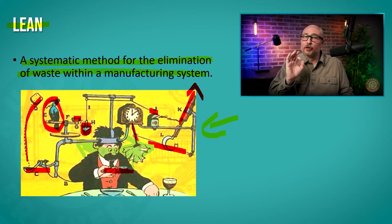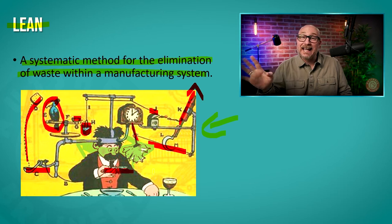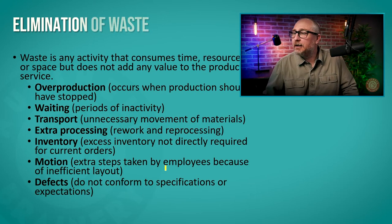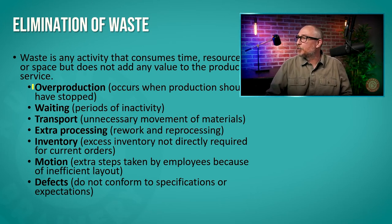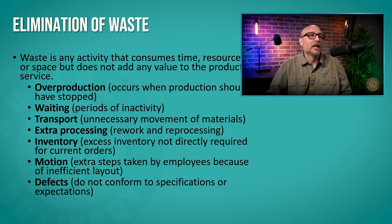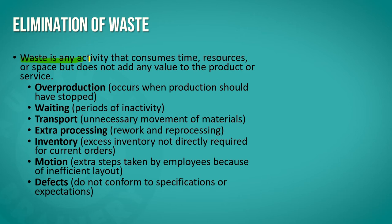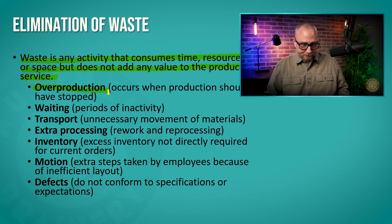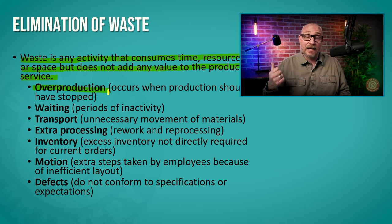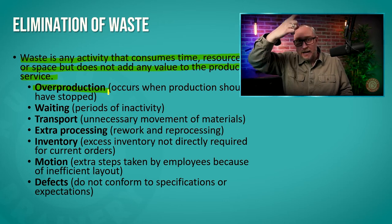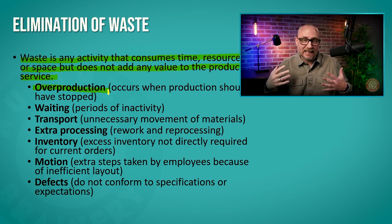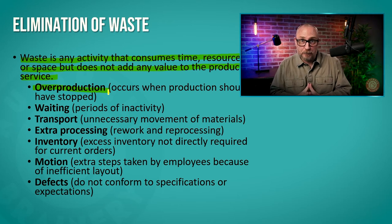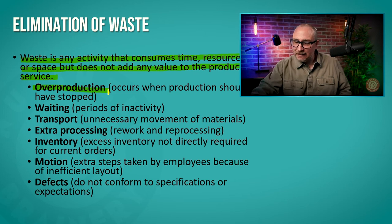Anybody can see this is ridiculous — and that's the point. Let's look at why it is ridiculous through the lens of lean. Lean tries to eliminate waste in every way it can. Waste is an activity that consumes time, resources, or space, but does not add value to the product or service. The first waste type is overproduction. Overproduction is highly wasteful. In this Rube Goldberg, he has that pendulum going back and forth — he only needs one or two swipes, but now he has an infinite number of swipes. He doesn't need overproduction.